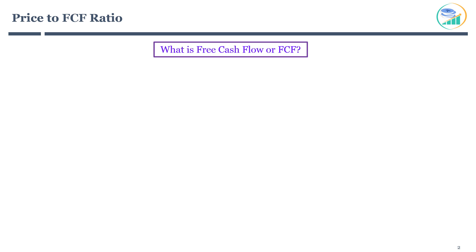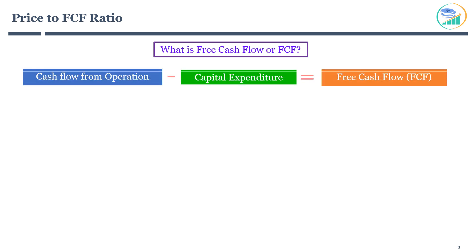The formula for free cash flow looks like this. It takes the cash flow from operations and subtracts capital expenditure of the company to get free cash flow for the year. Cash flow from operations represents the amount of money a company brings in from its ongoing operations after adjusting all the non-cash expenses.